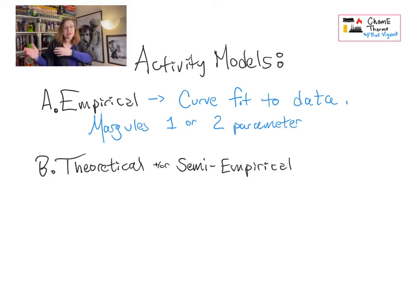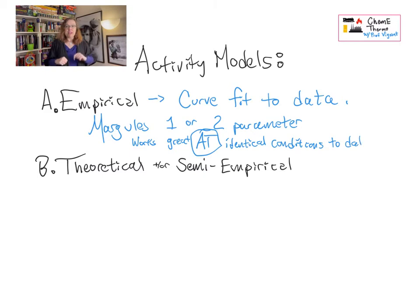With the asterisk that it's only really accurate in the region where those data were captured. Like Antoine equation was an equation of state that was purely empirical, Margules equation, either one or two parameters, is an empirical activity model. We'll tend to use empirical models a lot for by-hand calculations because those are the only ones simple enough to run quickly.